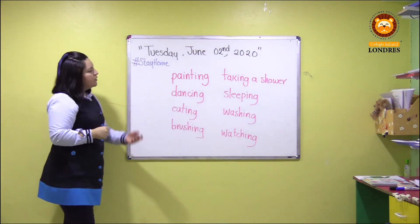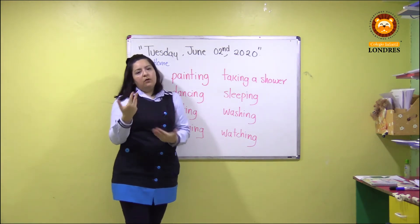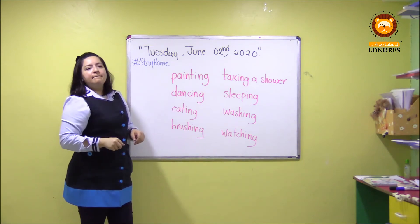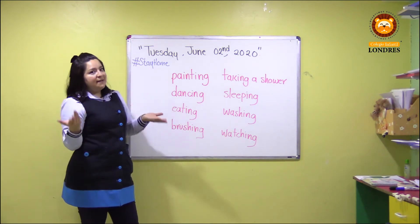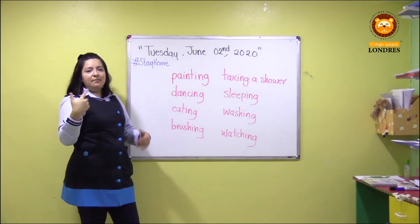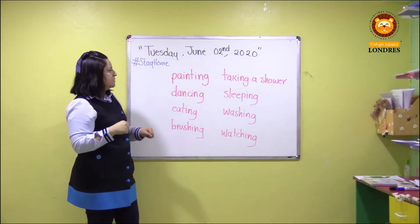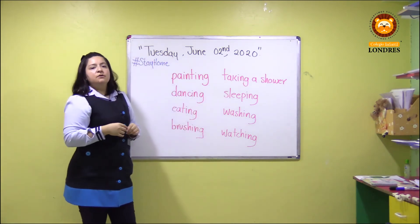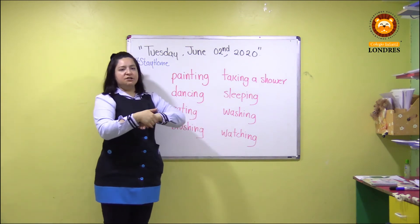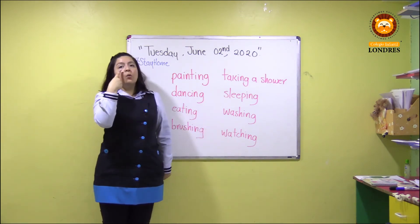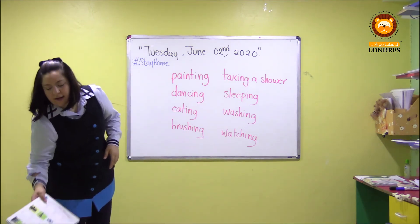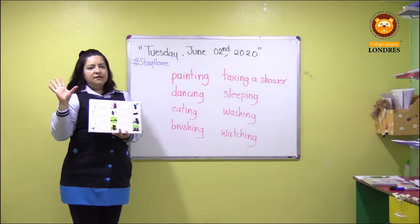Muy bien. Entonces ahora los vamos a identificar en español por si tienen alguna duda o si ya se les olvidaron algunos verbos. No se preocupen, no pasa absolutamente nada. Tenemos: painting — pintando; dancing — bailando; eating — comiendo; brushing — cepillando, pero en este caso los dientes; taking a shower — tomando un baño; sleeping — durmiendo; washing — lavando; and watching — observando. Very nice. Ustedes ya tienen estos verbos para que puedan realizar la actividad y sea muchísimo más sencillo.